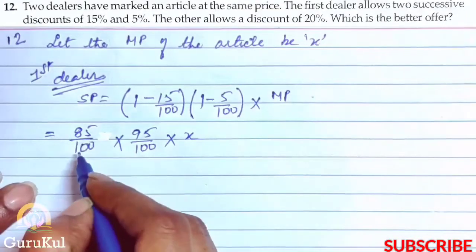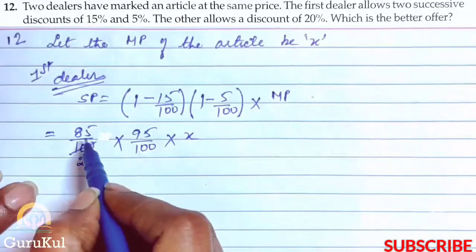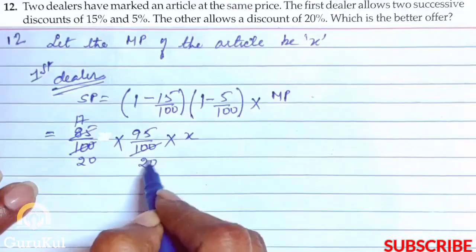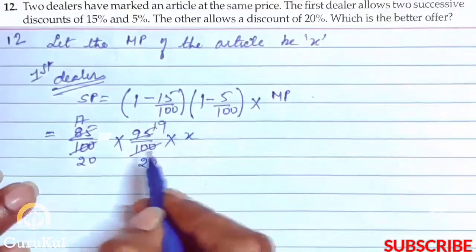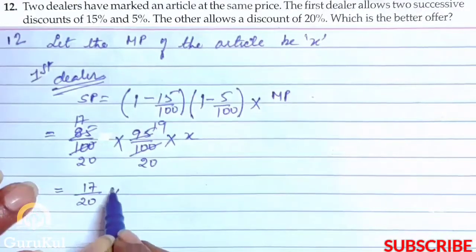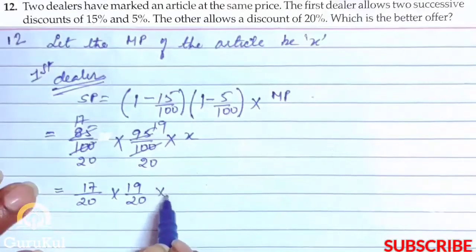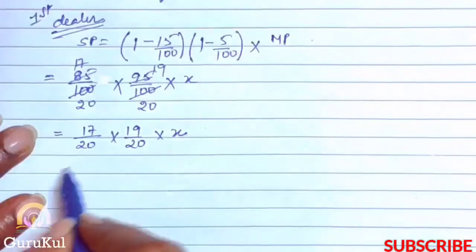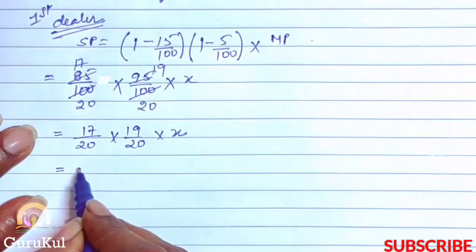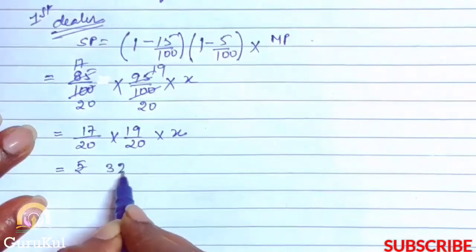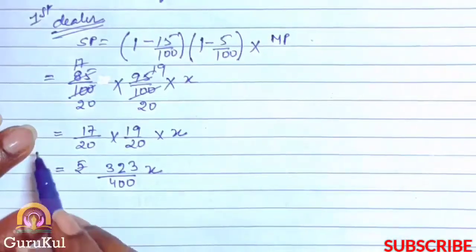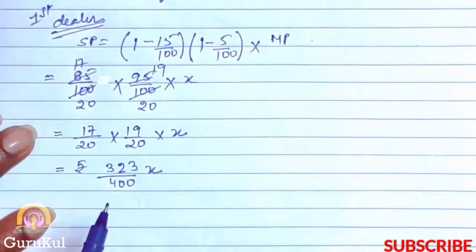Reducing by the factor of 5: 85/100 becomes 17/20 and 95/100 becomes 19/20. So SP = 17/20 into 19/20 into x. Multiplying these two fractions gives us 323x/400. This is the SP of the first dealer.